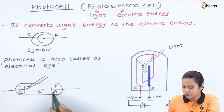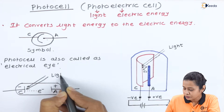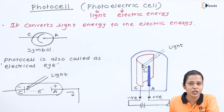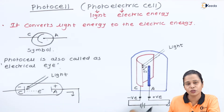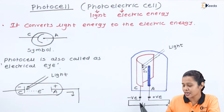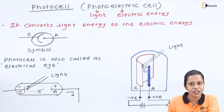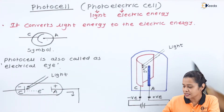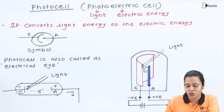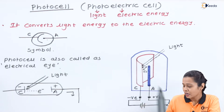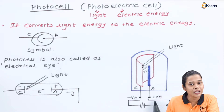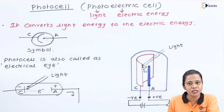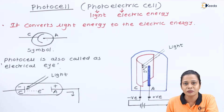The electron will be attracted towards the anode, and this light energy is now converted into electrical energy. This is the principle of the photoelectric effect, and the same thing happens in the photocell. The cathode is at negative potential, the platinum rod anode is at positive potential. Light of suitable frequency incident on the cathode causes emission of electrons, which are attracted to the anode, and current flows through the circuit. In this way, the photocell converts light energy into electrical energy.